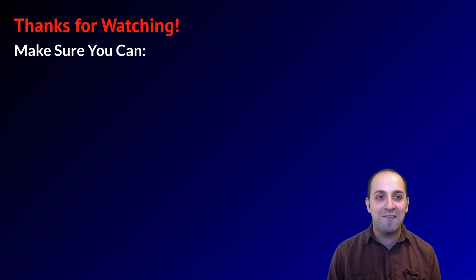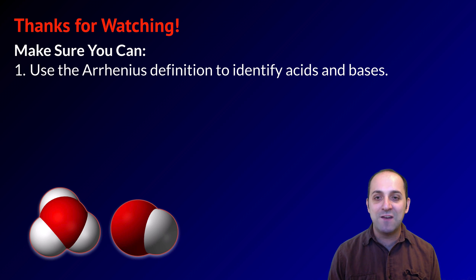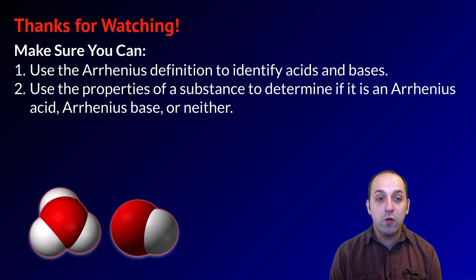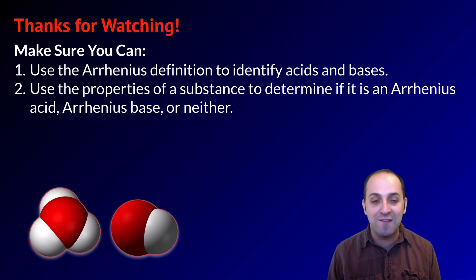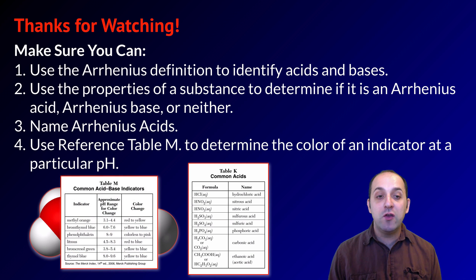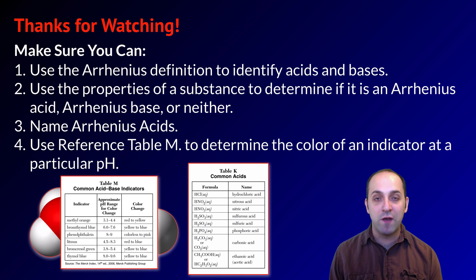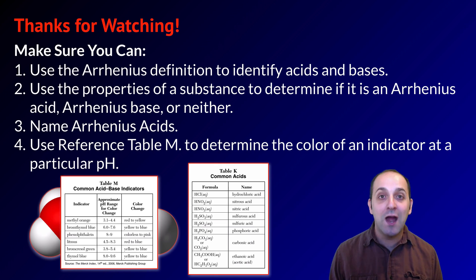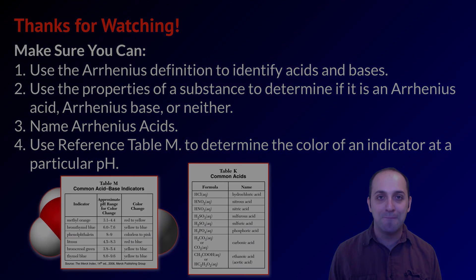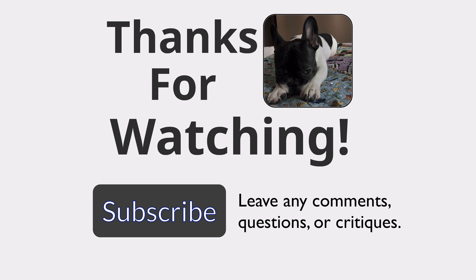Thanks for watching our discussion of Arrhenius acids and bases. Make sure you can use the Arrhenius definition to identify acids and bases, use the properties of a substance to determine if it's an Arrhenius acid, base, or neither, name Arrhenius acids, and use Reference Table M to determine the color of an indicator at a particular pH. If you can do all of those things, you're doing great. Write down any questions and leave them in the comments below. Thanks again for watching — have a great day!